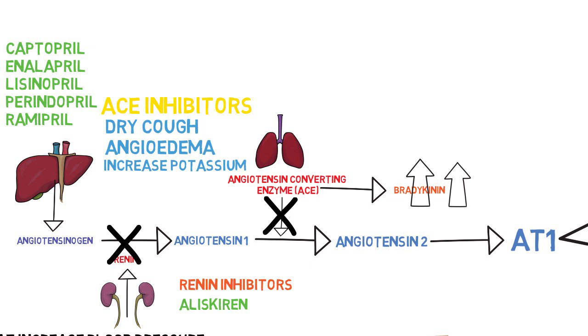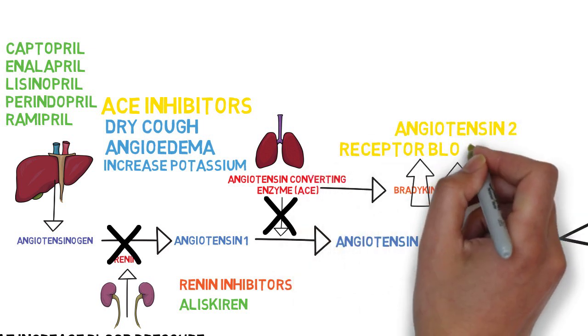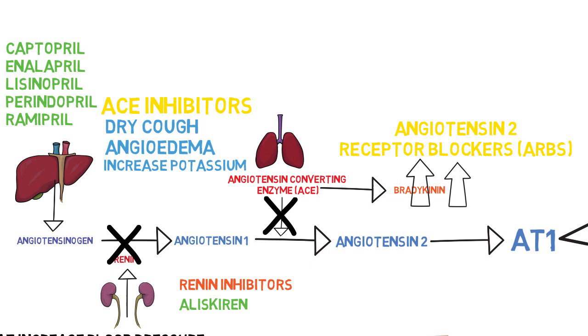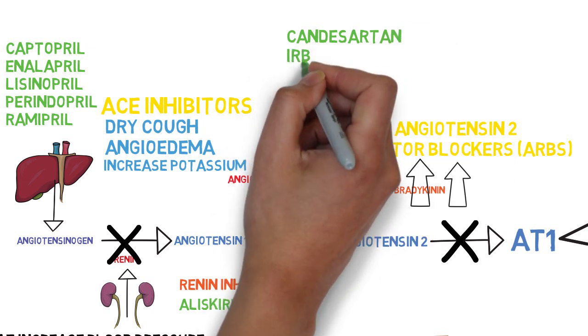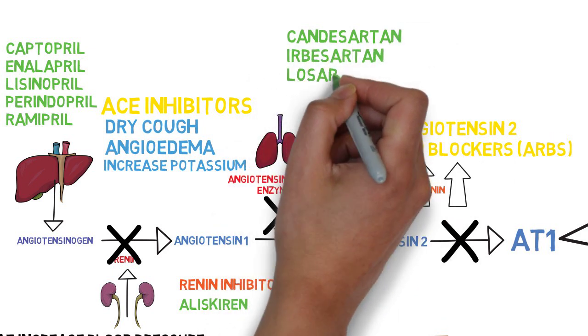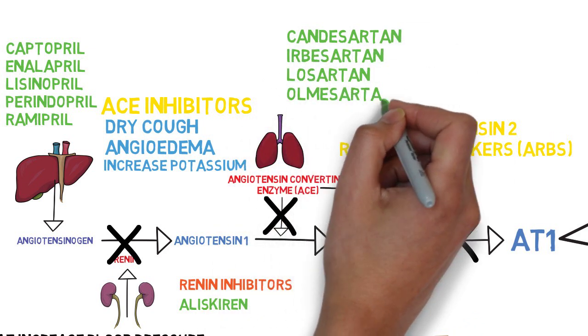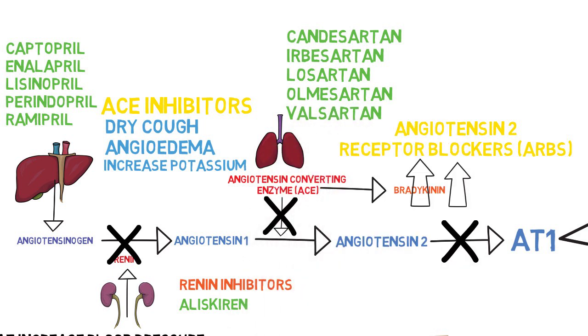Now the final class of drugs are called angiotensin 2 receptor blockers or ARBs. They block angiotensin 2 from binding to the AT1 receptor. These drugs don't increase bradykinin levels, so they have a much lower risk of dry cough and angioedema, but they can still cause hyperkalemia. Examples of drugs that belong to this class are candesartan, irbesartan, losartan, olmesartan, and valsartan.